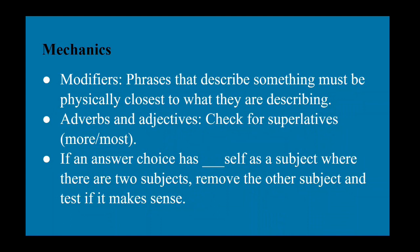Other mechanics to know: modifiers — phrases that describe something must be physically closest to what they are describing. If a noun and the adjective describing it are on opposite sides of the answer choice, that's not clear language. For adverbs and adjectives, check for superlatives: 'more' and 'most.' If an answer choice has a reflexive pronoun — myself, yourself, himself — as a subject with two subjects, remove the other subject and test if it makes sense. For example, 'I hurt I' doesn't make sense, but 'I hurt myself' is correct. Replace the second subject with the reflexive pronoun to see if the sentence is clearer.